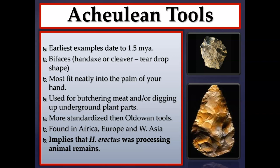The Acheulean tools generally associated with Homo erectus succeeded the Oldowan tools seen with Homo habilis and later australopithecines like Australopithecus garhi. The earliest Acheulean examples date to about 1.5 million years ago. Also called bifaces, hand axes, or cleavers, they have a teardrop shape fitting neatly into the palm. Hypothesized uses include butchering meat and digging up underground plant parts like tubers. They are more standardized in shape and size than Oldowan tools, with examples found in Africa, Europe, and western Asia.